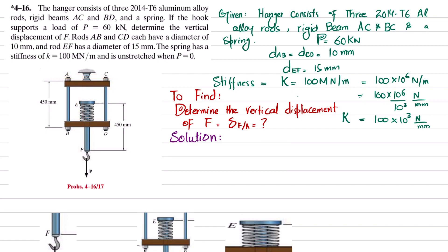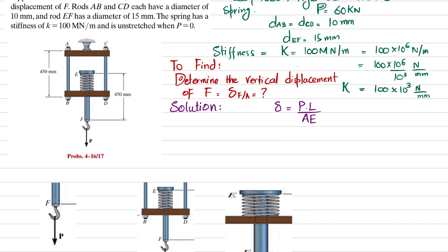All the given data is already mentioned, so let's start with the solution. We generally know that displacement equals force times length divided by area times E. First of all, we will find the forces in each rod — what we call internal loading.